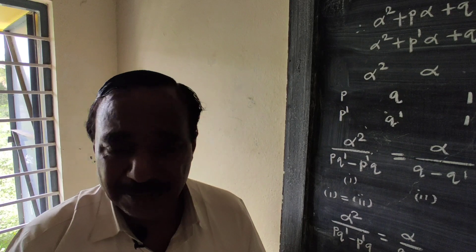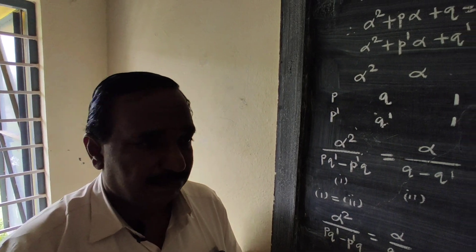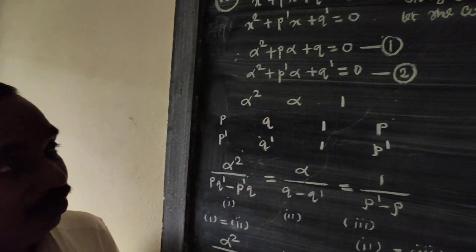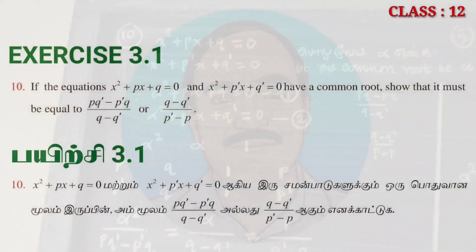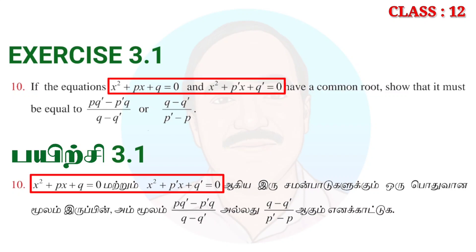Now, X is 3.1, problem number 10. X squared minus PX plus Q is equal to 0. X squared plus P dash X plus Q dash equal to 0.